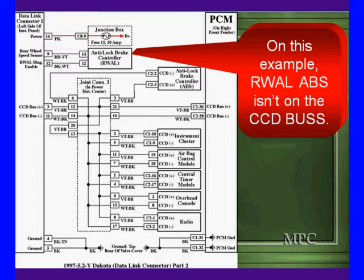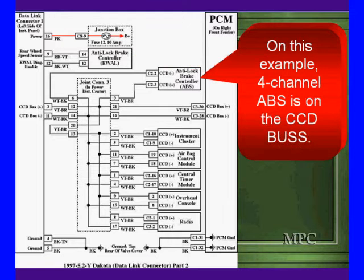We have another data bus here. It's for the rear wheel analog brakes. It's the basic system. It's not on CCD. However, if you have four-channel ABS, it is on the CCD bus.